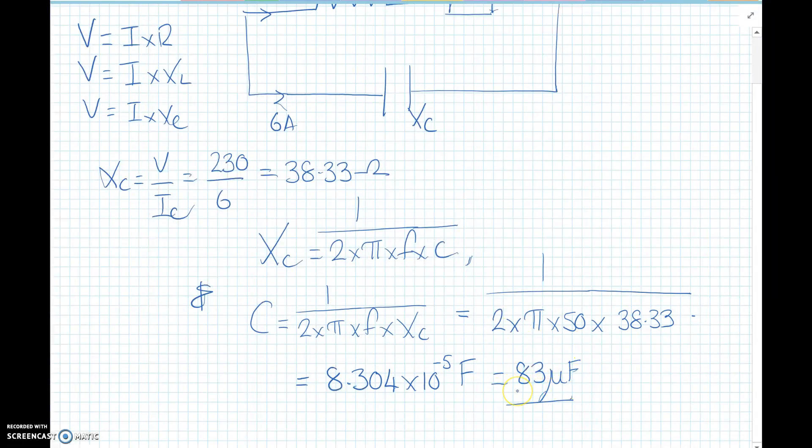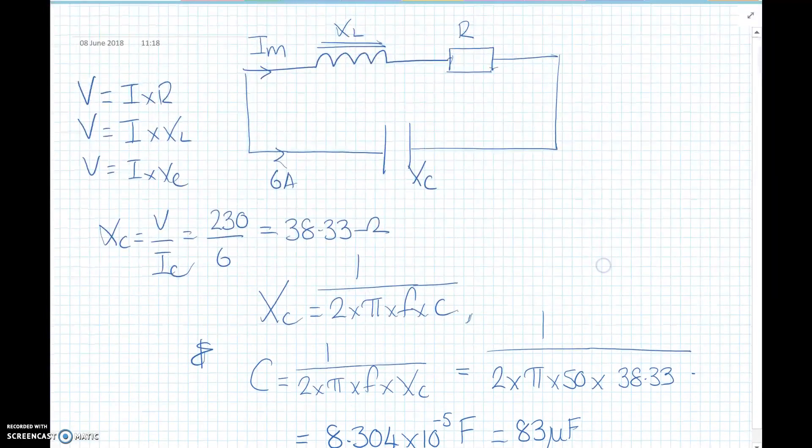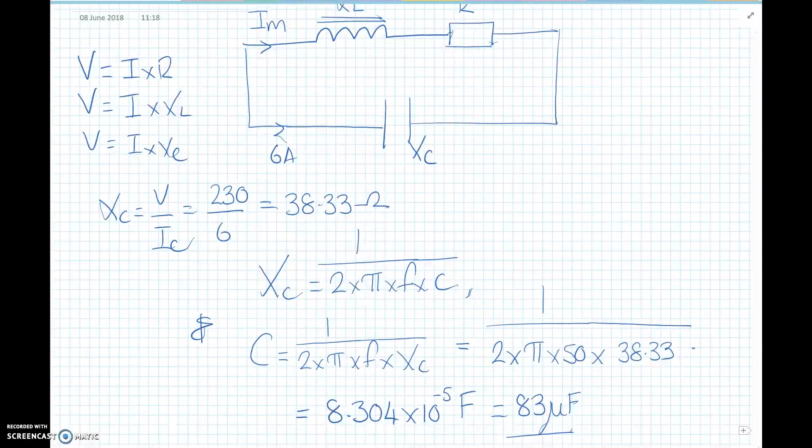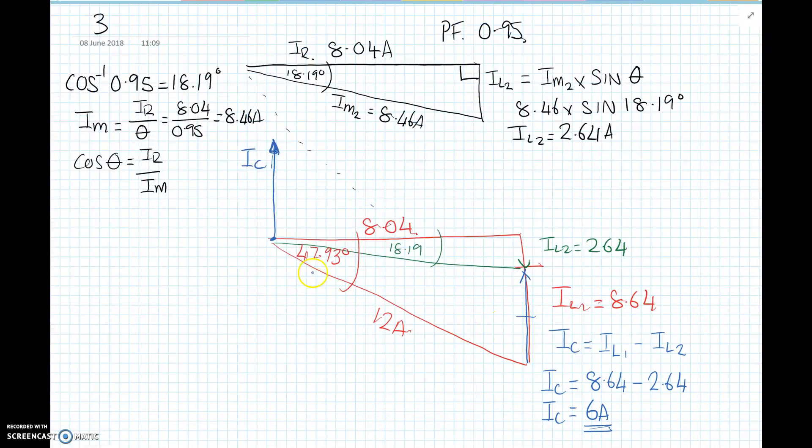So an 83 microfarad capacitor will reduce the current from 12 amps down to our much lower amperage of 8.46 amps. Hope you found that useful, thanks for watching.